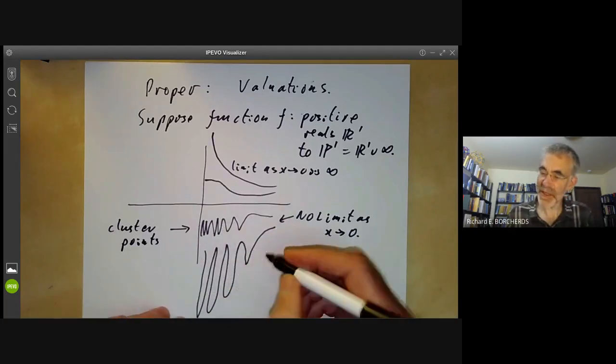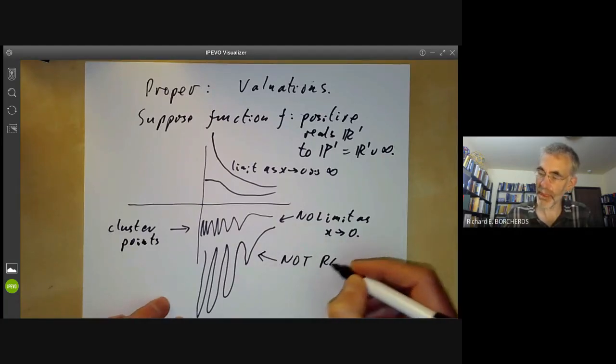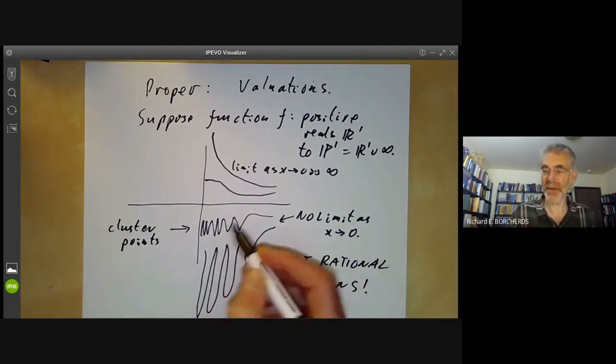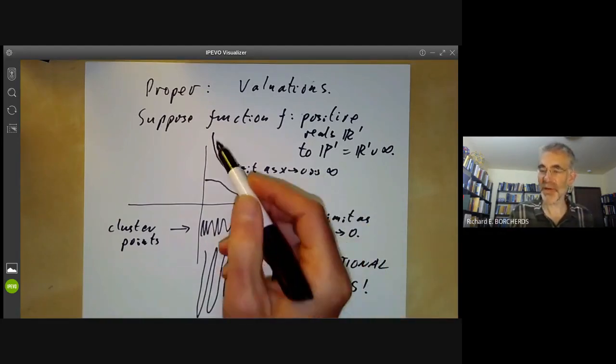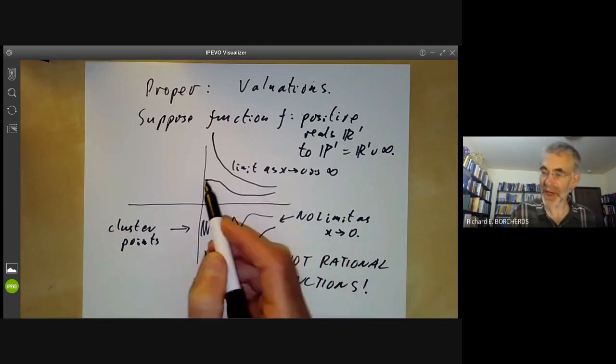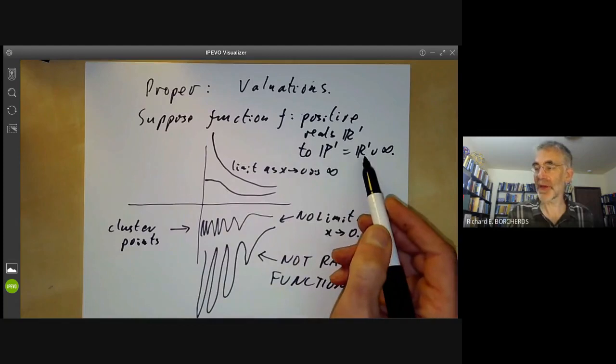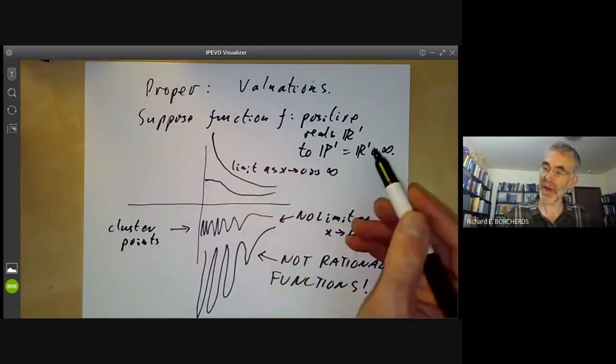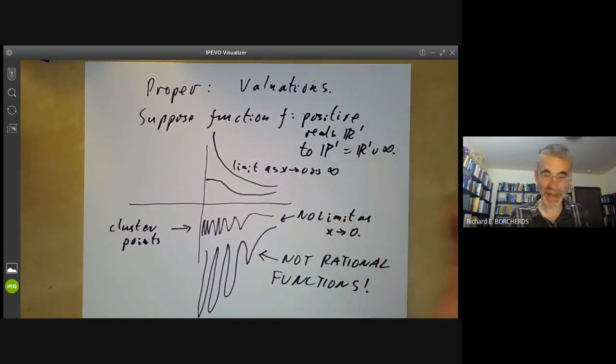However, these two cases can't happen for rational functions. Rational functions can't have infinitely many oscillations, and if you've got a rational function defined for non-zero reals, it always has a limit as you tend to 0. The limit might be infinity or a real number. Of course, it doesn't necessarily have a limit if you consider maps to the real line, as the real line isn't compact.